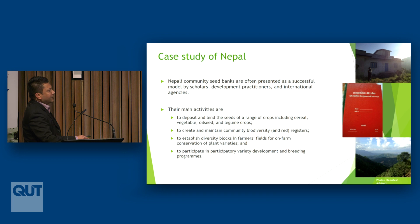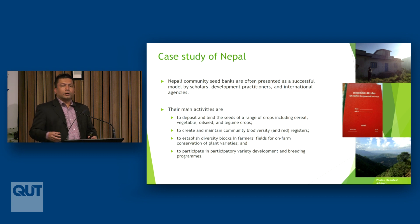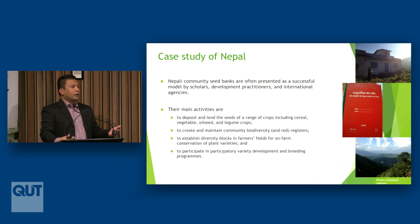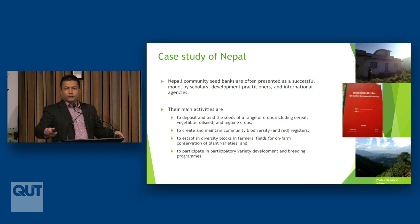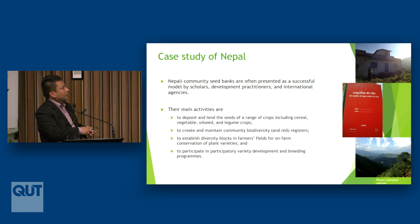Community seed banks' main activities are to deposit and lend seeds of a range of crops — cereals, vegetables, oilseeds, and many others — functioning much like monetary banks. Local communities deposit certain seeds, and in times of need other or the same communities come to borrow those seeds on a loan basis. For example, if you take two kilograms of seed this year, after harvesting you are required to return double or one-and-a-half times that amount, as agreed.